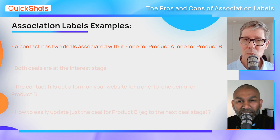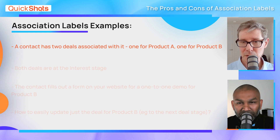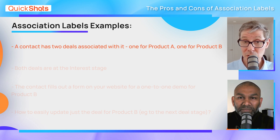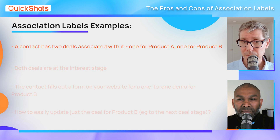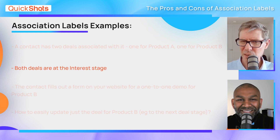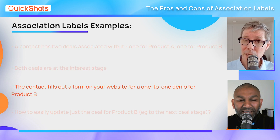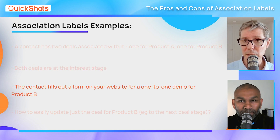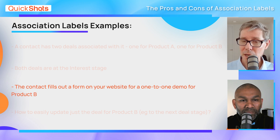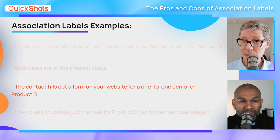Another use case, which I think is more compelling, is when you want to selectively update some deals associated with a contact as part of a contact workflow. For example, let's say you've got a number of products you're selling at your company. A contact has two deals - one for product A and one for product B. They go to the website and fill out a form for a one-on-one demo with product B, so that's essentially a form submit against the contact. That means product B has moved from just interest to purchase intent.